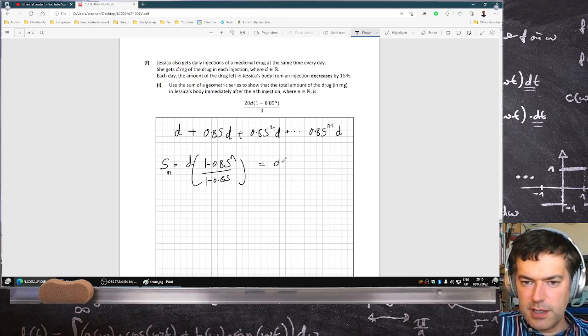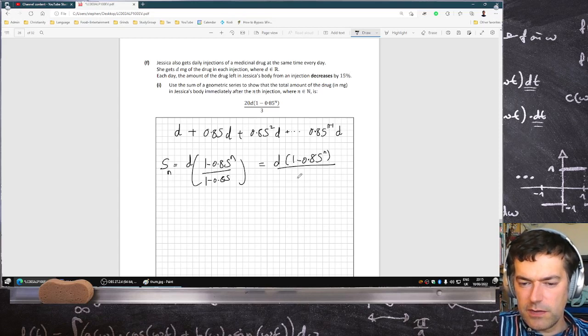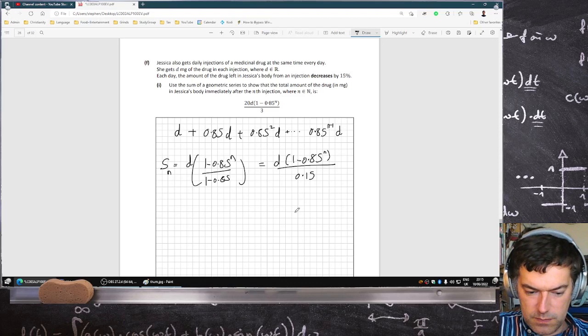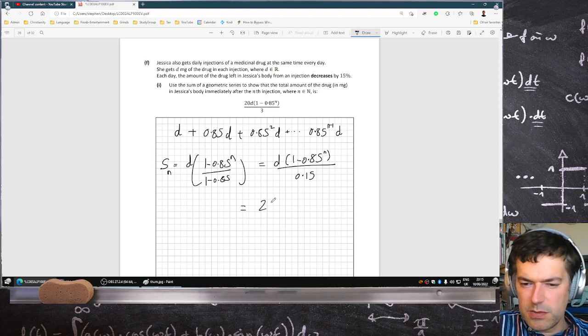That's D times 1 minus 0.85 power N over 0.15. Multiply above and below by 20. 20D times 1 minus 0.85 to the N over 3.